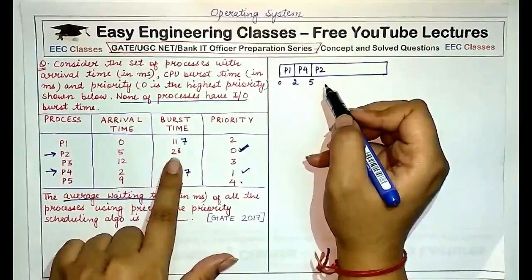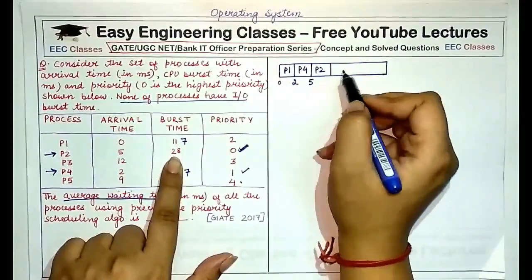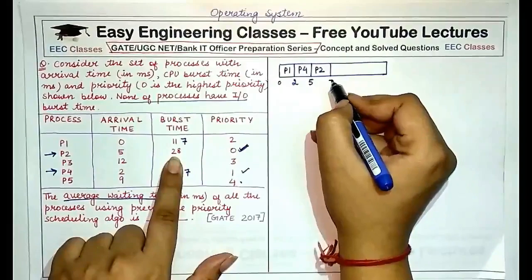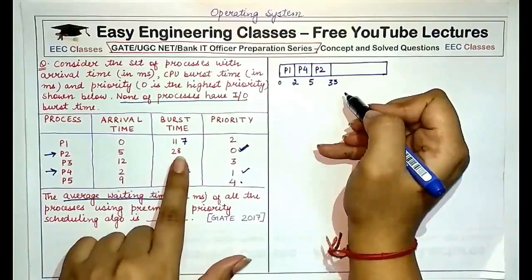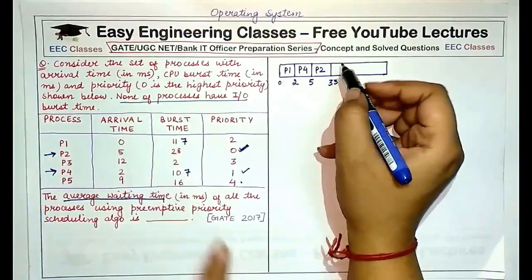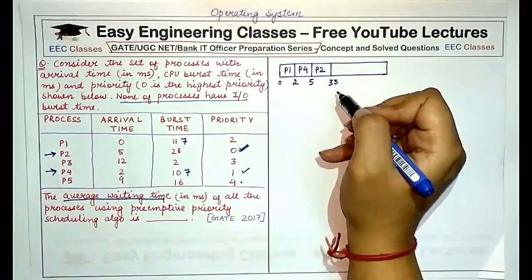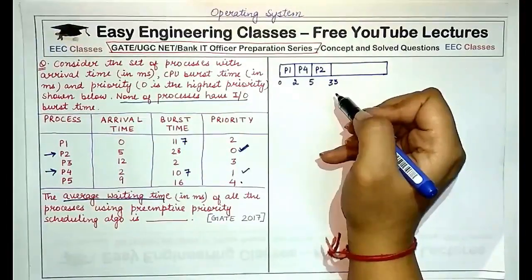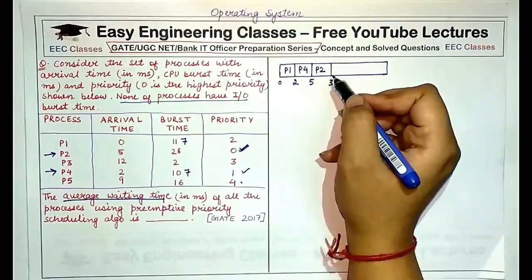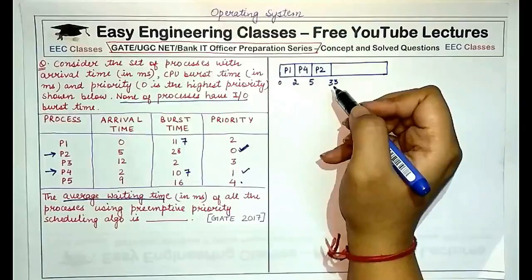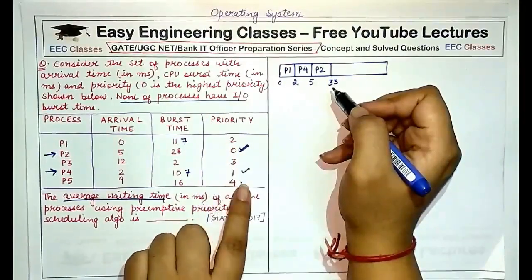P2 has the highest priority and a burst time of 28 units, so it will execute to completion, finishing at time 33. By time 33, all the other processes would have arrived. So now the remaining processes — P1, P3, P4, P5 — will execute in their order of priorities, from highest to lowest.